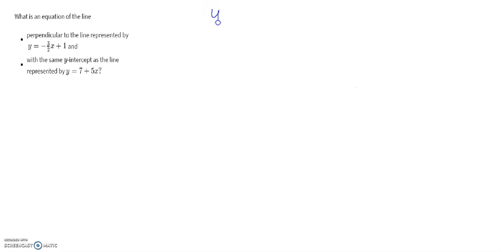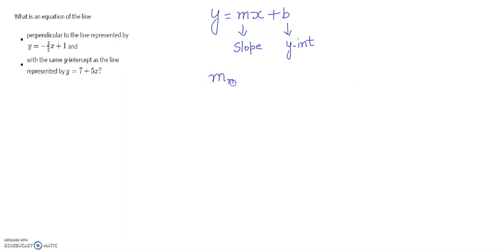I will write the equation of a line as y equals mx plus b, where m is the slope and b is the y-intercept. Since the line is perpendicular, the slope of the new line — m new — is the negative reciprocal of negative 3 over 2. There is already a negative sign in that equation, so applying negative reciprocal gives us positive 2 over 3. The slope of the new line is 2 over 3.